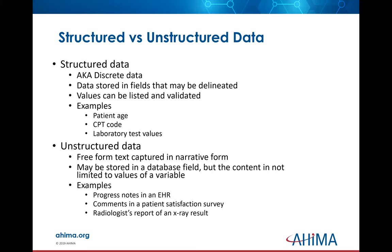We also have structured versus unstructured data, which involves important concepts when looking at electronic health records. Structured data is discrete data — things that have a value, typically numerical, such as lab tests, dates, patient age, and CPT codes. Unstructured data is basically text. For example, a pathology report may contain phrases like 'moderately differentiated cells,' which doesn't mean much without context. These appear in progress notes, comments, and radiology reports — the narratives. Think of structured data as discrete numerical values and unstructured data as text.